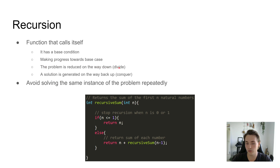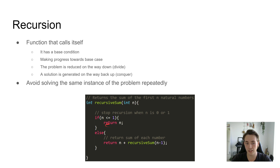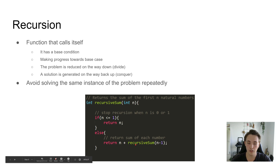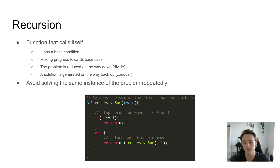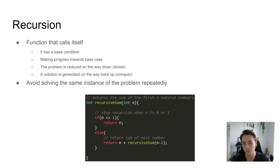The problem is reduced on the way down through the recursive calls, and then a solution is generated on the way back up, which is called concurrence. When the base condition is reached, we return the value and the solution has been generated on the way back up. We use recursive functions to avoid solving the same instance of a problem repeatedly instead of copying and pasting the same code several times.